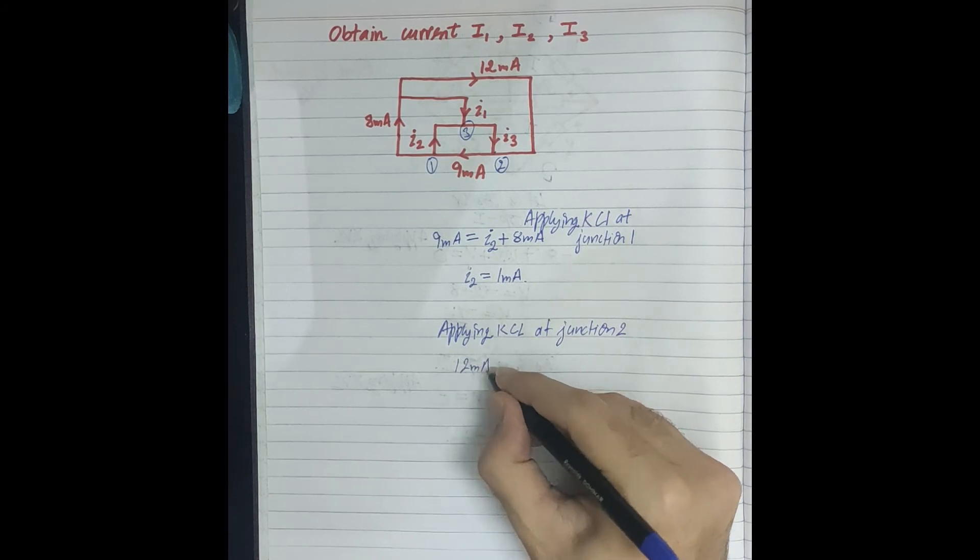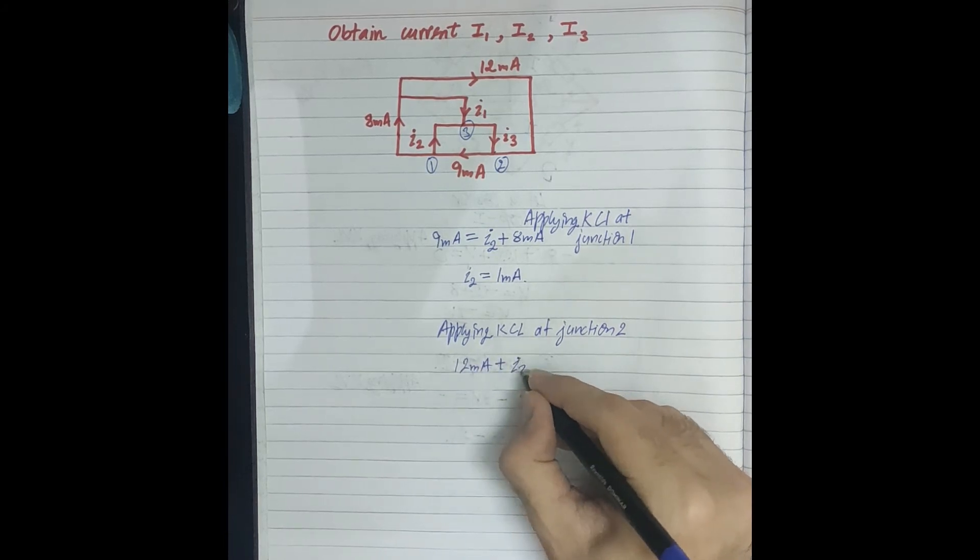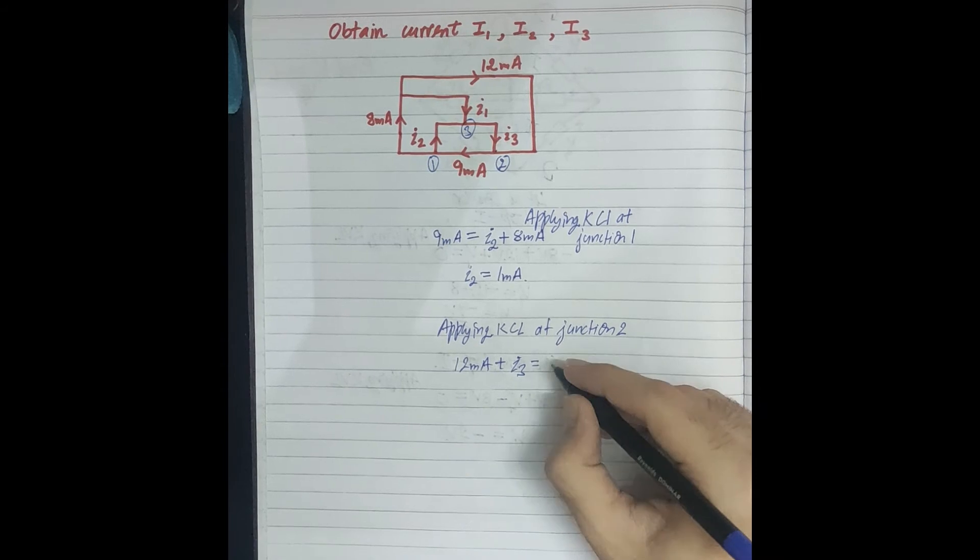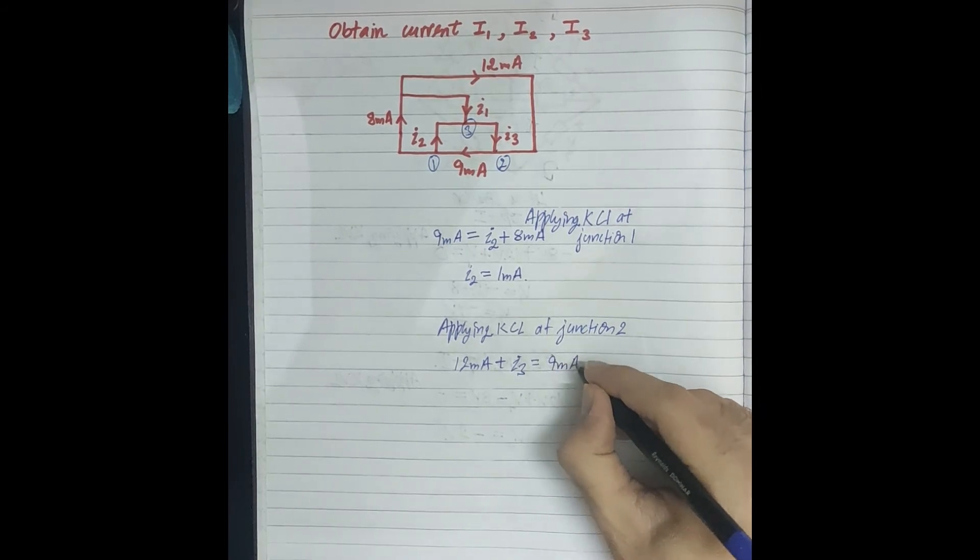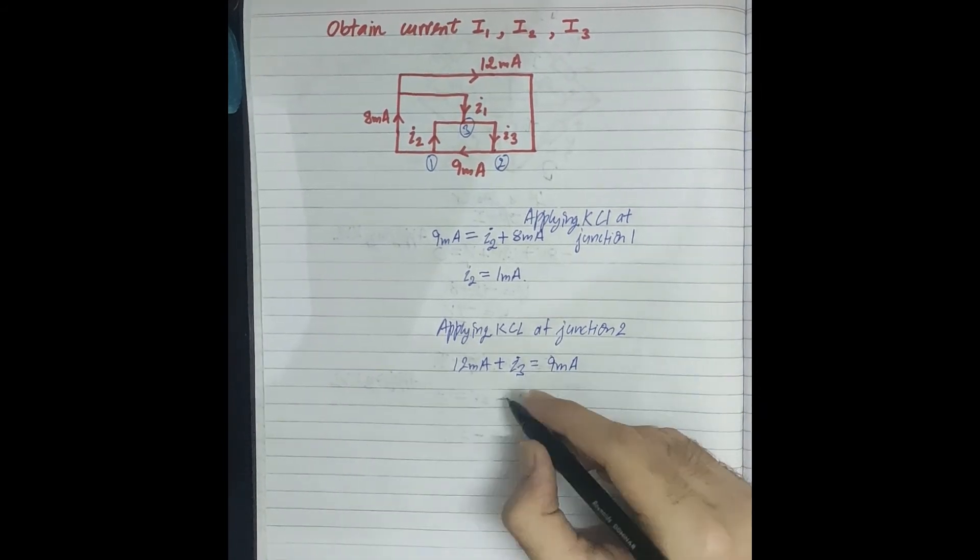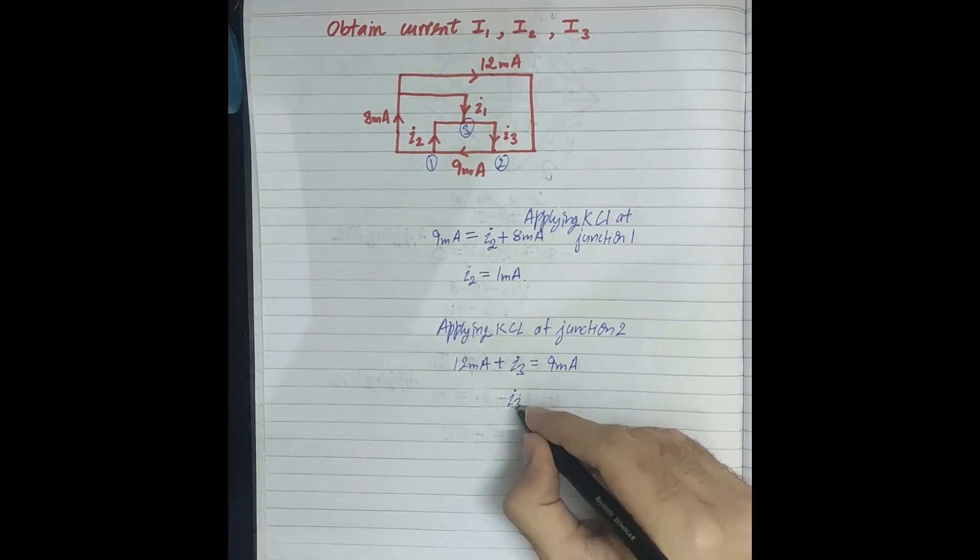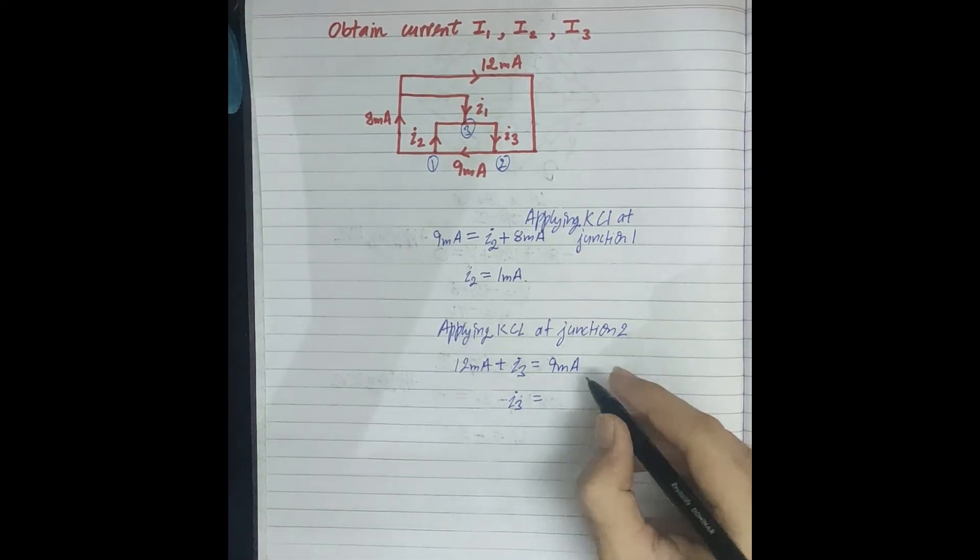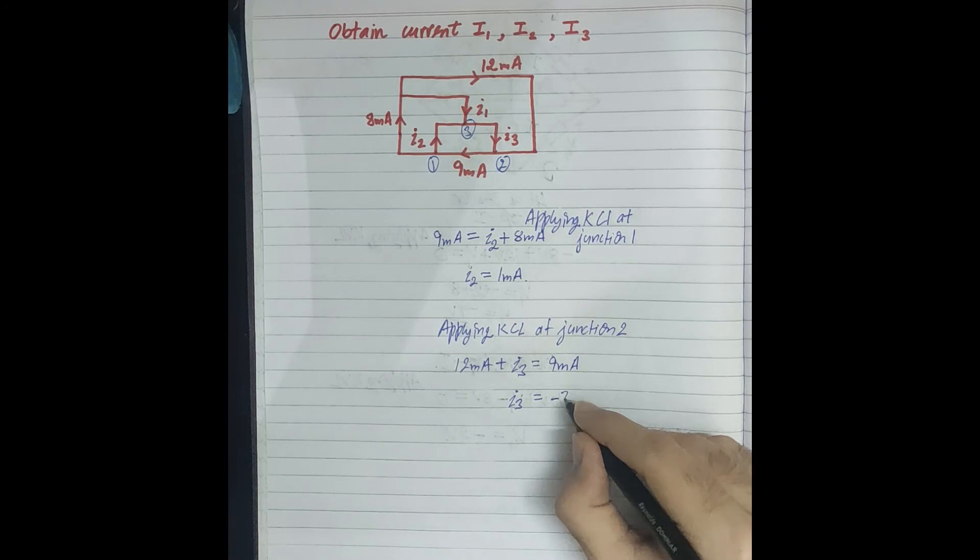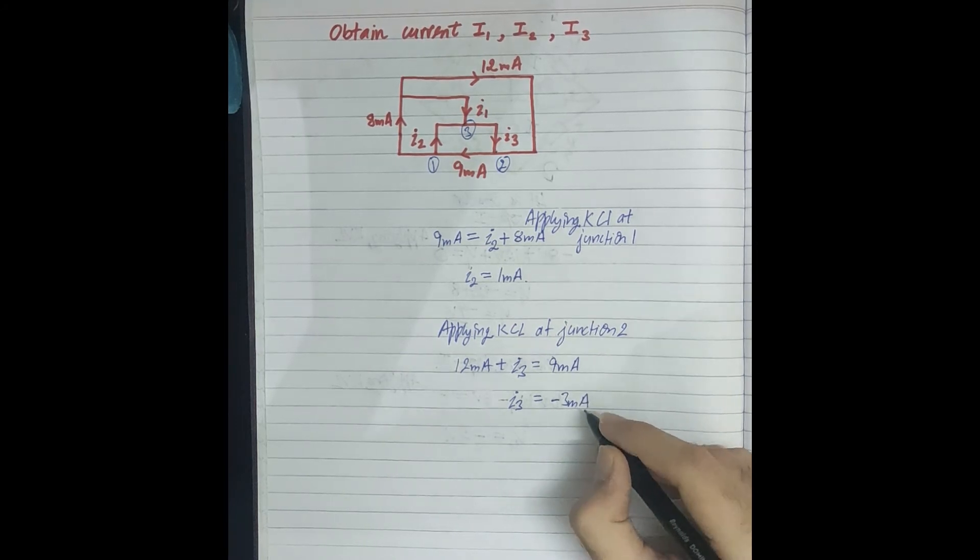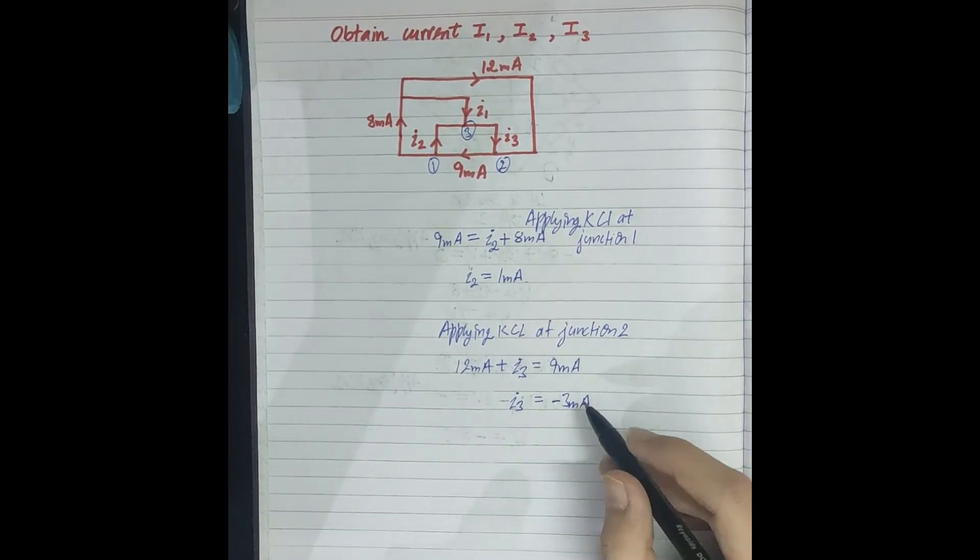We apply here: 12 mA plus I3 current equals 9 mA, which is the outgoing current. Here we can see that I3 value is 9 minus 12, which equals minus 3 mA. So we have calculated I3.